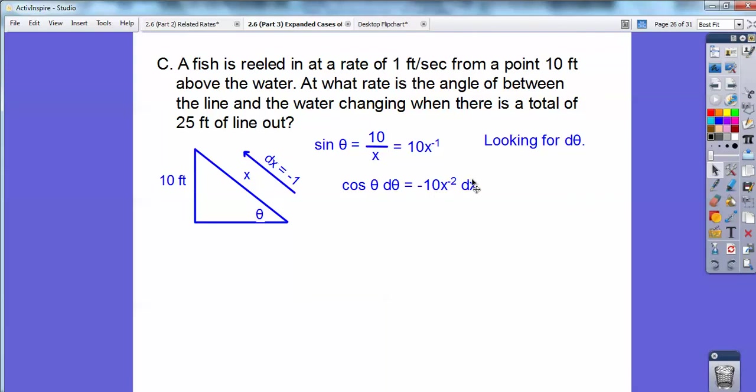Now when x is 25, I get this right triangle right here. So now I can figure out theta with this right triangle because 25 squared is 625, 10 squared is 100, 625 minus 100 is 525, so this is the square root of 525, a little Pythagorean theorem for you right there.